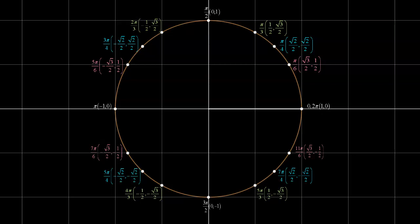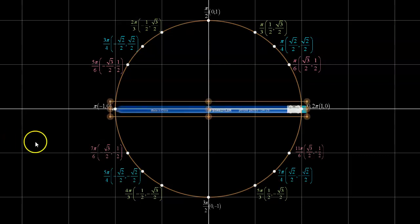Remember, tan is the ratio of the y coordinate divided by the x coordinate. So what I'm going to do is I'll start with a pencil oriented horizontally through the origin, and since tan is y divided by x, what I'm looking for is where is the y coordinate divided by the x coordinate equal to negative root 3?